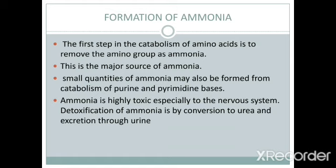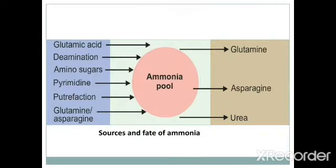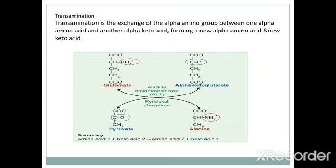Ammonia is a highly toxic compound and must be converted into a non-toxic form — that is, urea — which is excreted through urine. Sources of ammonia include glutamic acid deamination, amino sugars, catabolism of pyrimidines, glutamine, and asparagine. This toxic ammonia is converted into urea and excreted through urine.